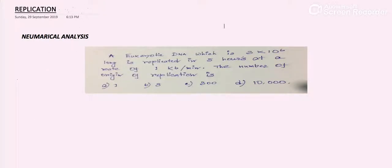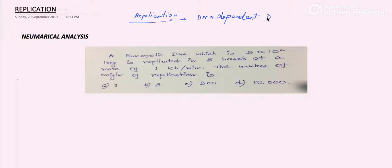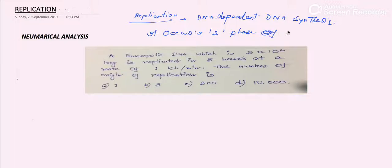Hello friends, today we are going to discuss a numerical analysis of replication. Replication is nothing but DNA-dependent DNA synthesis. It occurs at the S phase of the cell cycle — that's why the name of the phase is S phase, or synthetic phase.